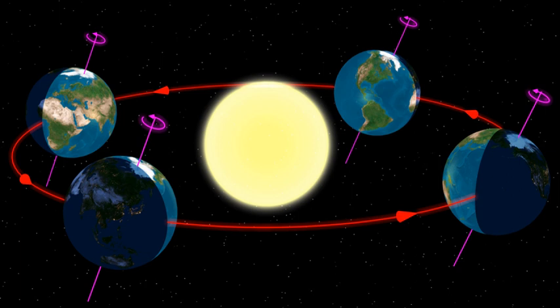Aristarchus of Samos already proposed a heliocentric model in the 3rd century BC. In the 16th century, Nicolaus Copernicus presented a full discussion of a heliocentric model of the universe in much the same way as Ptolemy had presented his geocentric model in the 2nd century. This 'Copernican Revolution' resolved the issue of planetary retrograde motion by arguing that such motion was only perceived and apparent.